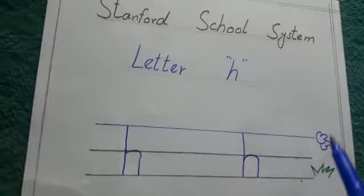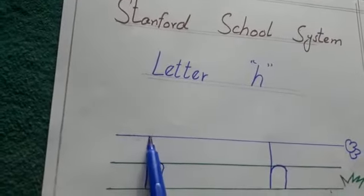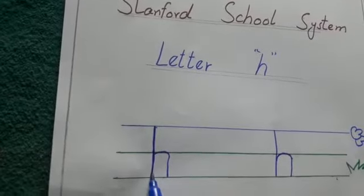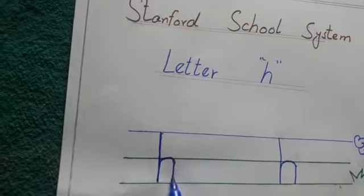So I write here letter h. Make a standing line and make a curve and make a standing line. This is letter h.